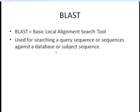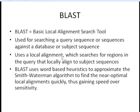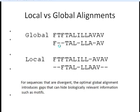BLAST uses a local alignment, which searches for regions in the query that locally align to the subject sequence. The way BLAST works is it uses a word-based heuristic, taking a portion of the sequence as the seed and then extending out from there using a local alignment method. There are two commonly used versions: NCBI BLAST, which we're going through today in its web version, and WUBLAST, created at Washington University by the original developer of BLAST.